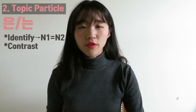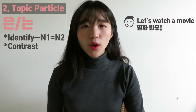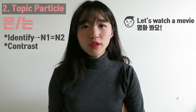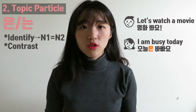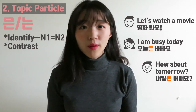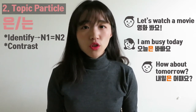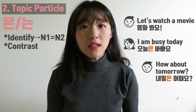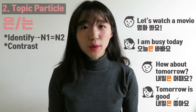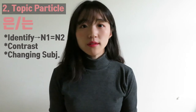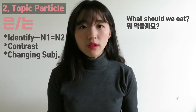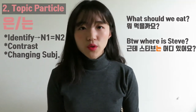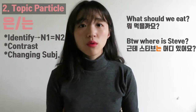Here's a contrast conversation example. A boy says 영화봐요? — let's watch a movie. The girl replies 오늘은 바빠요 — I'm busy today — implying today specifically she's busy compared to other days. The boy says 내일은 어때요? — how about tomorrow? — comparing tomorrow to today. The girl replies 내일은 좋아요 — tomorrow is good. The third function is changing the subject. For example, while discussing what to eat — 뭐 먹을까요? — you suddenly say 근데 스티브는 어디 있어요? — shifting the topic to where Steve is.